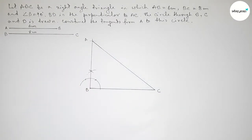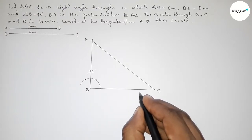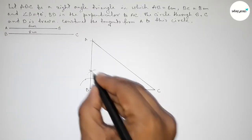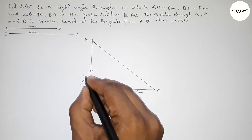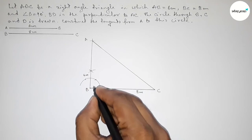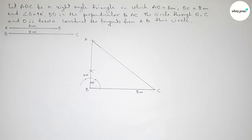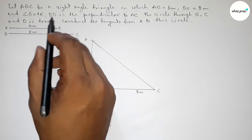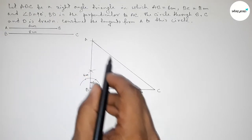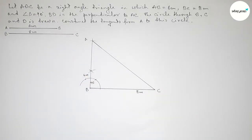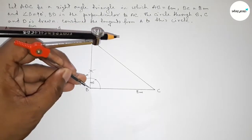So here this side is 8 centimeter, this side is 6 centimeter, and here is the 90 degree angle — so we got a right angle triangle. Now we have to draw a perpendicular line BD on the line AC from the point B.